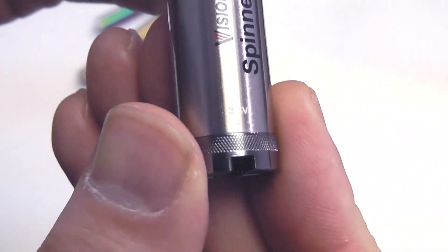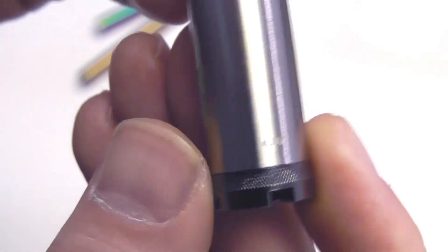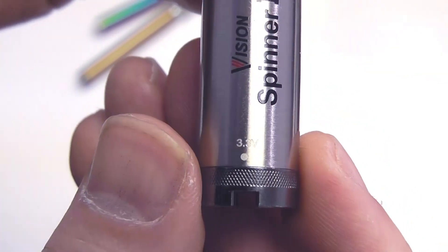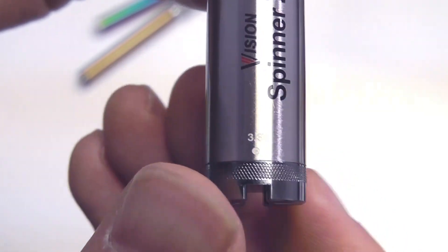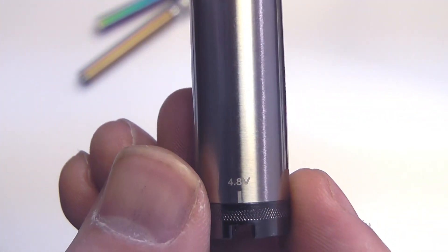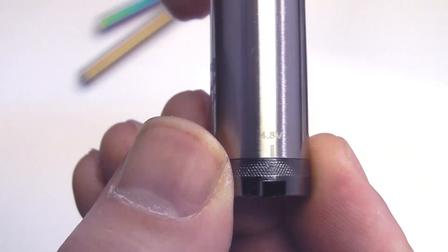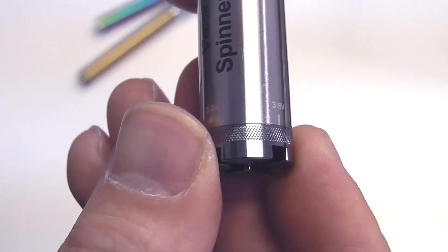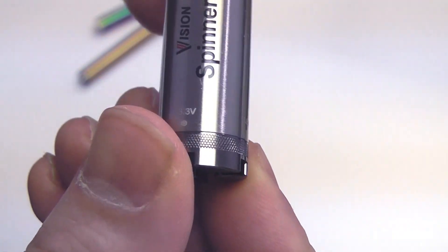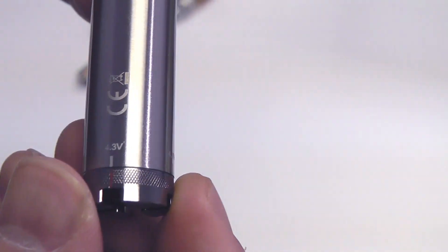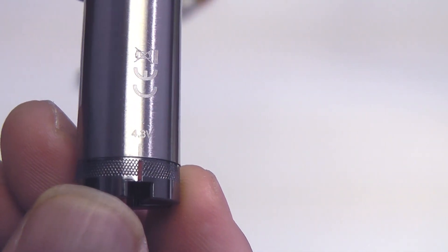At the bottom here you've got your standard dial to adjust the voltage going from 3.3 up to 4.8. There's the 3.3, goes all the way around to the 4.8. Vision did something great here. They listened to their customers. Their customers were constantly telling them, 'We really like this dial at the bottom, and you can see right now I've got it on 4.3 volts.'